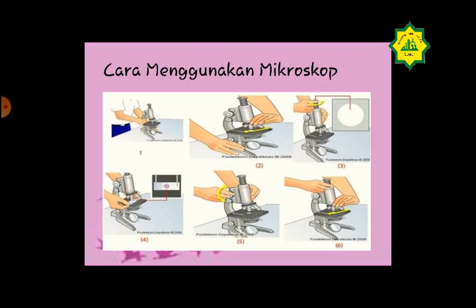Cara menggunakan mikroskop: pertama, ambil mikroskop dari tempat penyimpanan dengan tangan kanan memegang lengan mikroskop dan tangan kiri memegang alas, lalu letakkan di tempat yang datar, kering, dan memiliki cahaya yang cukup. Kedua, putar revolver sehingga lensa objektif dengan perbesaran lemah berada pada posisi satu poros dengan lensa okuler, ditandai bunyi klik pada revolver. Ketiga, pasang lensa okuler dengan ukuran perbesaran sedang; cahaya tampak terang berbentuk bulat diperoleh dengan cara mengatur diafragma.